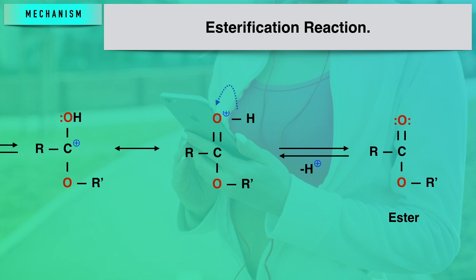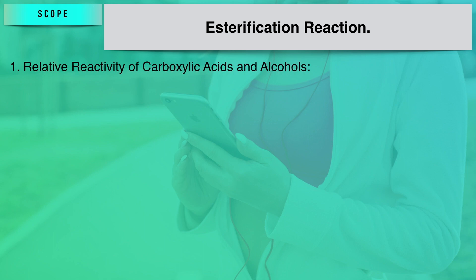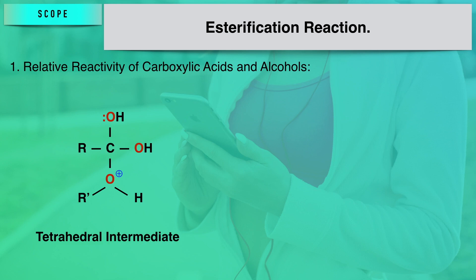That is about the mechanism of esterification. Now, following this, we will see the relative reactivities of the carboxylic acids and alcohols used in this process. As we saw in the mechanism, there is a formation of a tetrahedral intermediate, and it is clear that during esterification the rate will definitely be sensitive to steric hindrance.